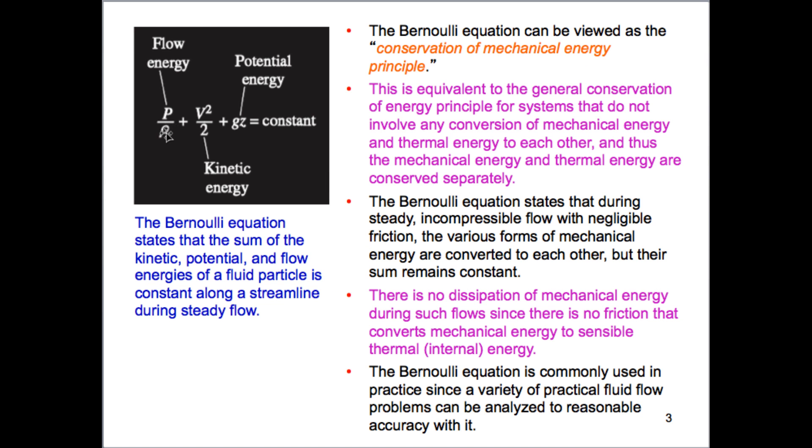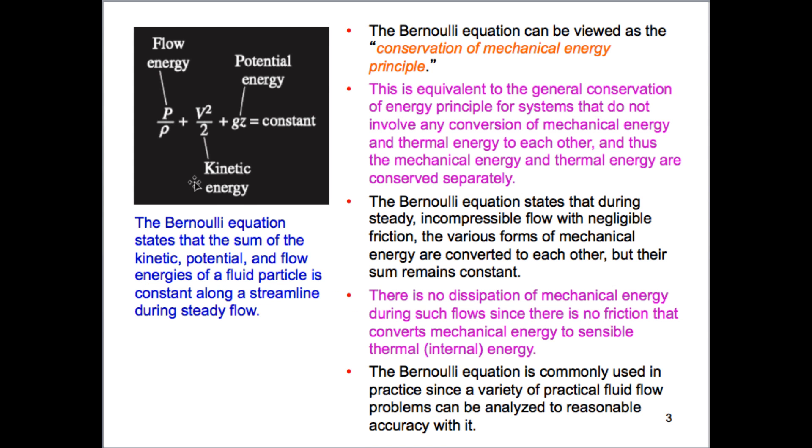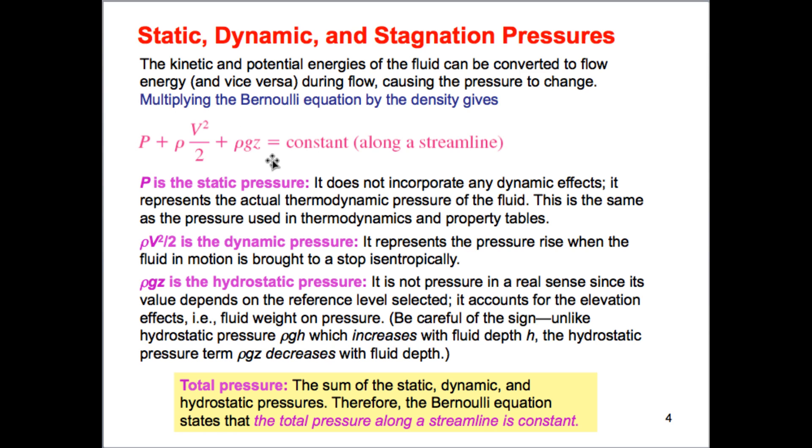If we multiply this equation by density, we convert all of these energies into pressures. We can express the Bernoulli equation in several different ways but we can also say that not only is energy conserved but the pressure along the streamline remains constant. P here being the static pressure, this is the dynamic pressure which has to do with the movement of the fluid, and this is the hydrostatic pressure rho g h. The total pressure of all of these together is called the total pressure.